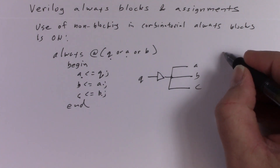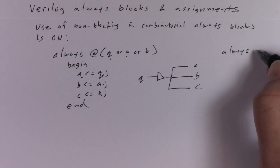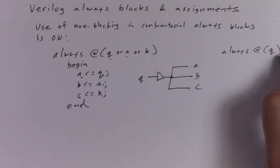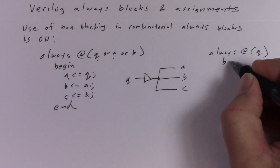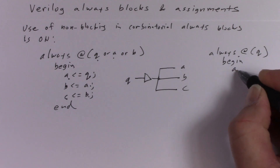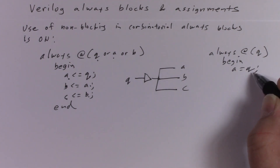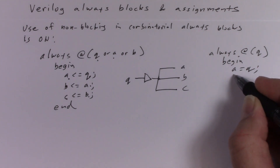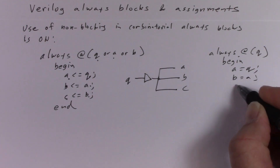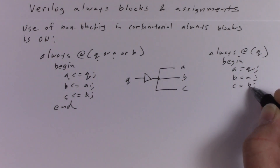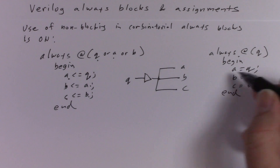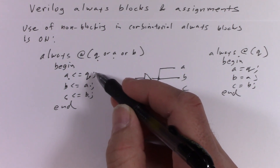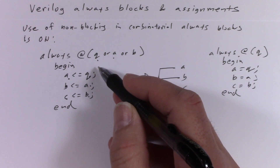With blocking assignments in a combinatorial block, the approach is a little more straightforward: input Q changes, the body runs, A equals Q so A immediately has the new value, then B equals A gets that new value, and C equals B gets B's new value immediately. You don't have to keep rescheduling. So this is maybe a little simpler to understand, but the non-blocking assignments give you the same results — it's just a bit unusual what the simulator has to do.